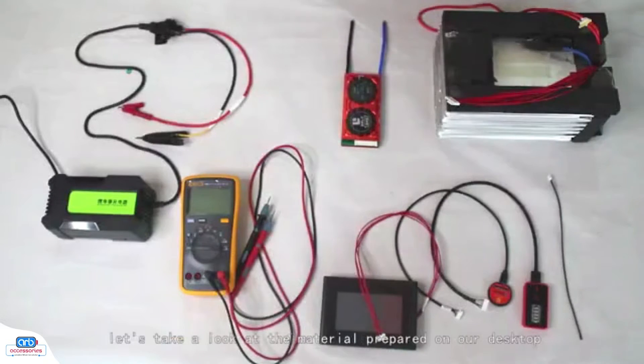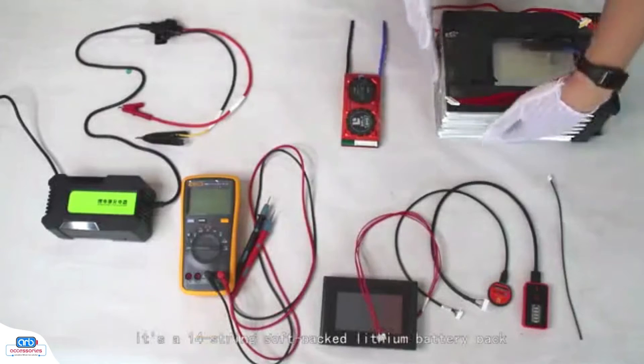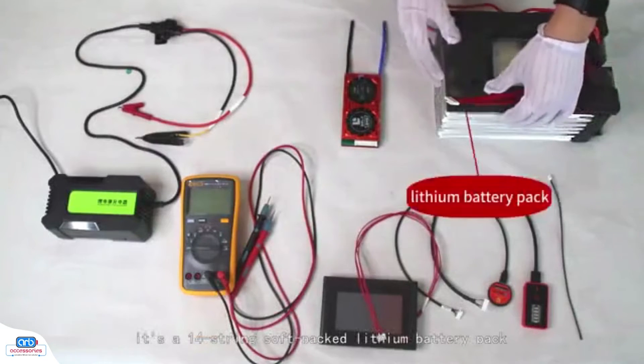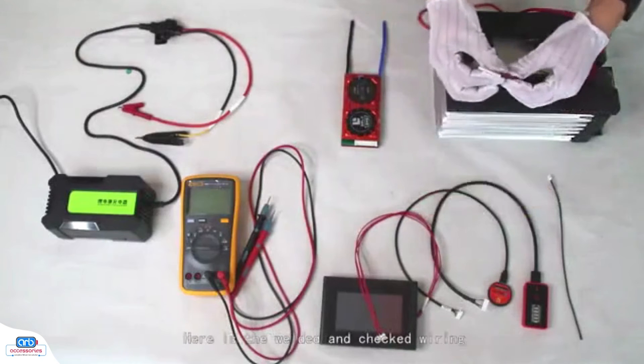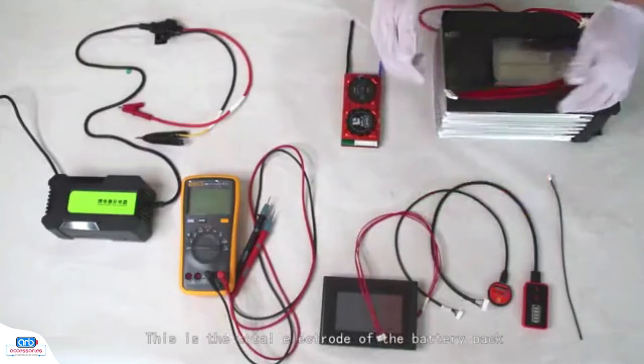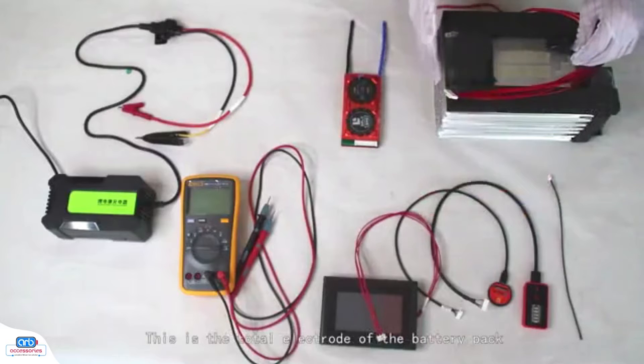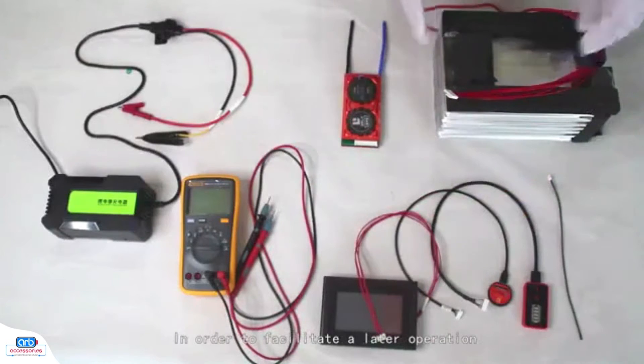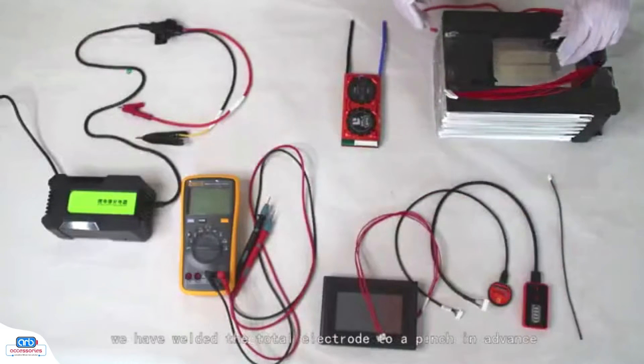First, let's take a look at the material prepared on our desktop. Here, it's the 14-string soft-packed lithium battery pack. Here is the welded and checked wiring. This is the total electrode of the battery pack. To facilitate a later operation, we have welded the total electrode to a pinch in advance.